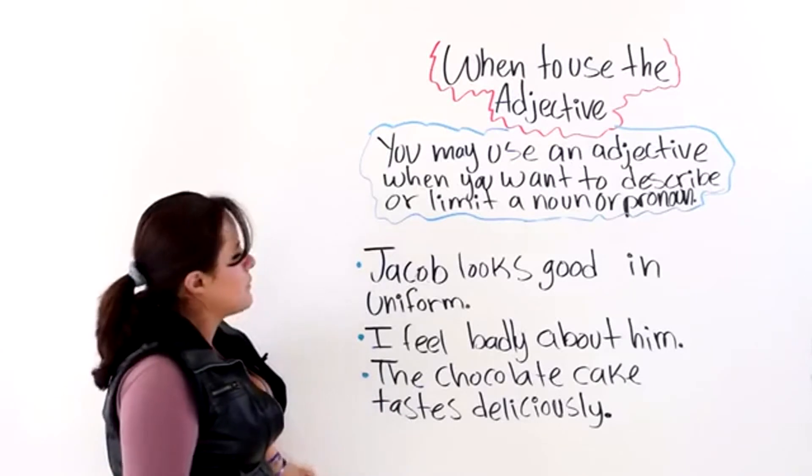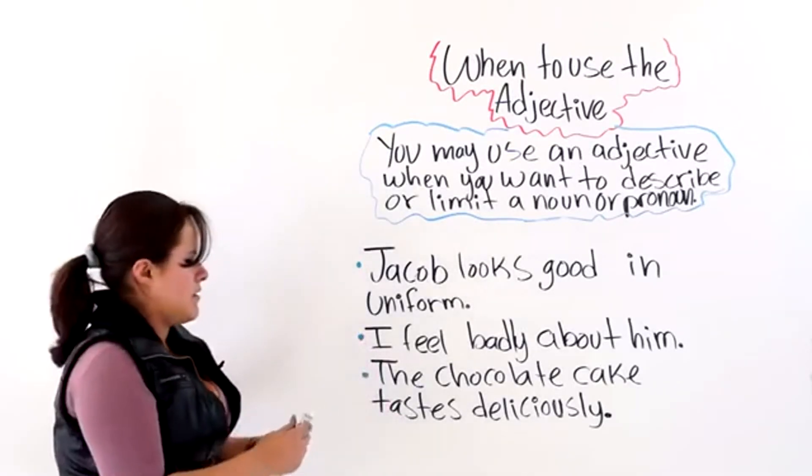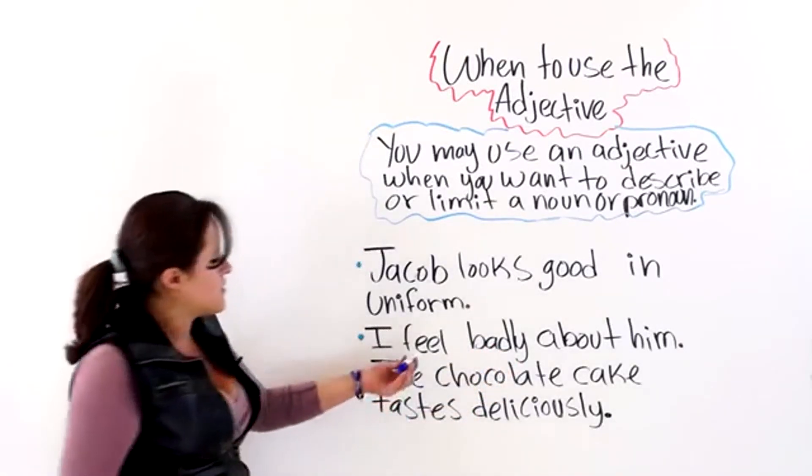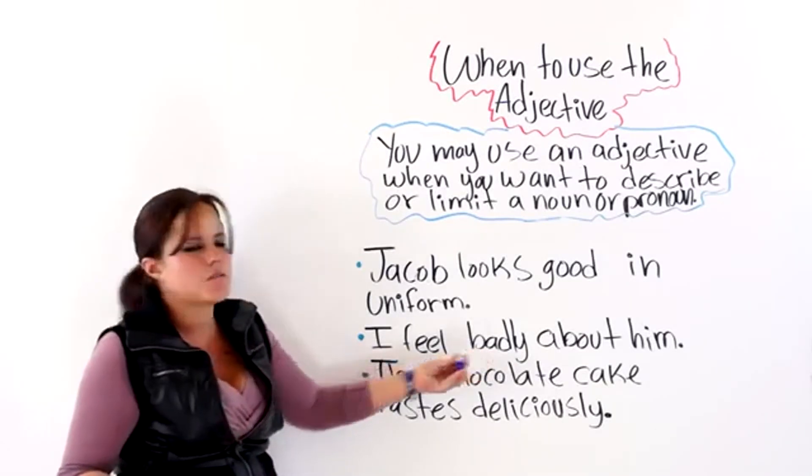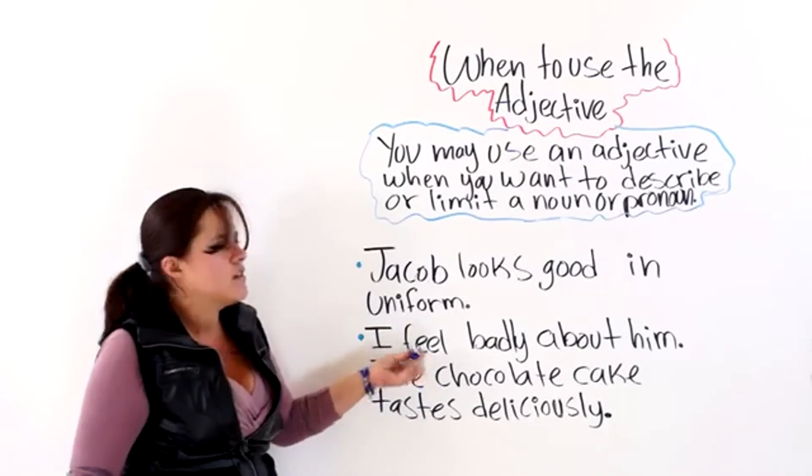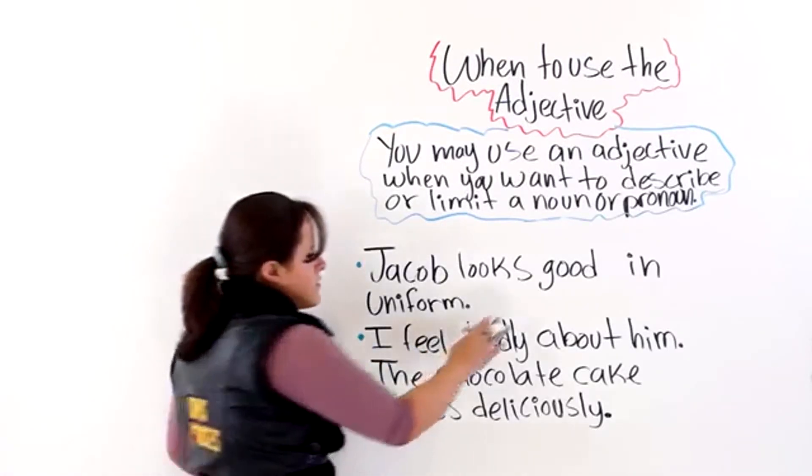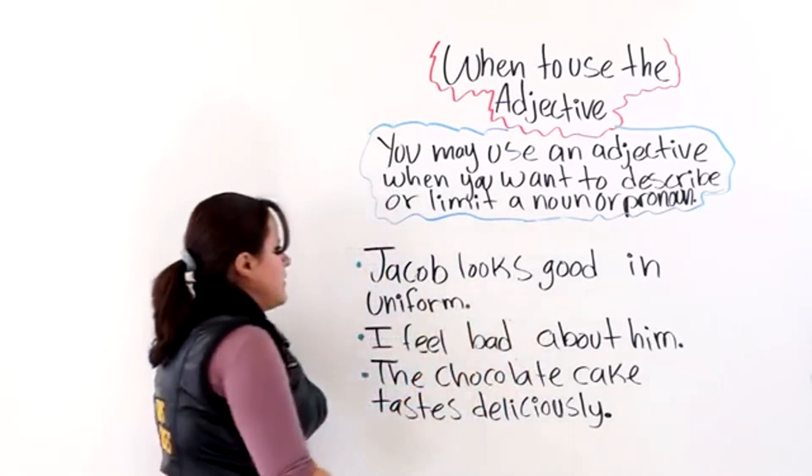The next one says, I feel badly about him. So, as you can see, we have badly. But this here is a linking verb. So, this here cannot be describing the action or the linking verb. It is describing the pronoun. So, we must take away the L-Y. I feel bad about him.